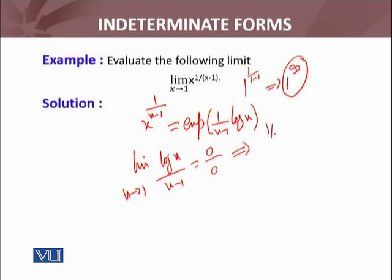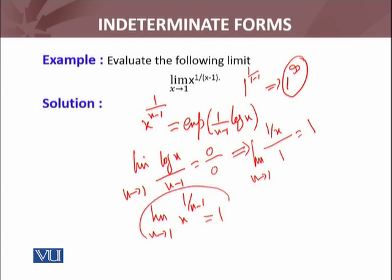Whenever we have the 0 by 0 form, we apply L'Hôpital's rule. L'Hôpital rule को apply करें — log(x) का derivative 1 over x होता है, x minus 1 का derivative 1 आएगा. So we take the limit x approaches to 1, that will be 1/1 = 1.